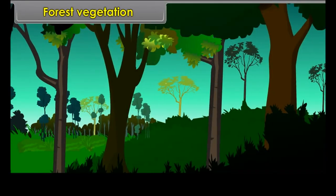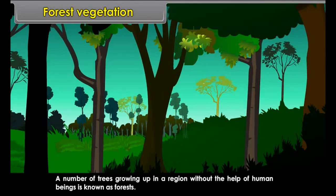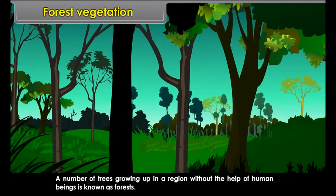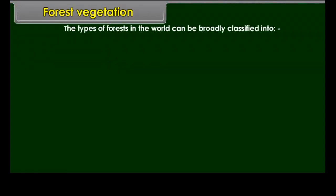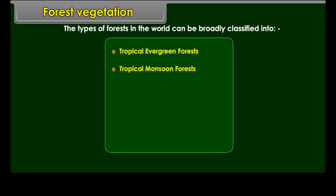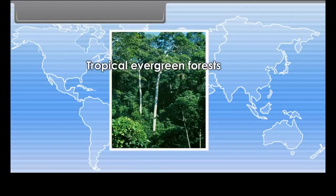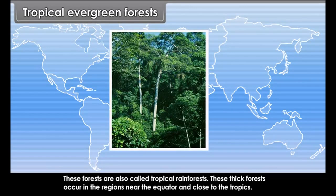Forest Vegetation. A number of trees growing up in a region without the help of human beings is known as forest. The types of forests in the world can be broadly classified into: tropical evergreen forests, tropical monsoon forests, temperate evergreen forests, the Mediterranean type of forests, temperate deciduous forests, and coniferous forests.